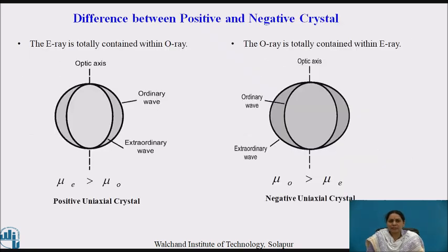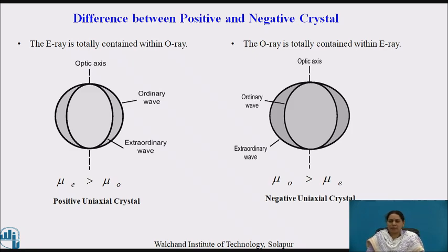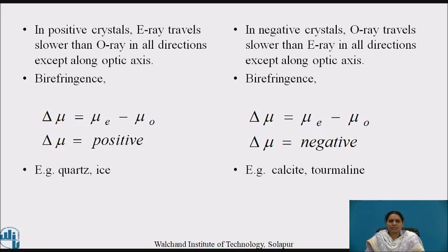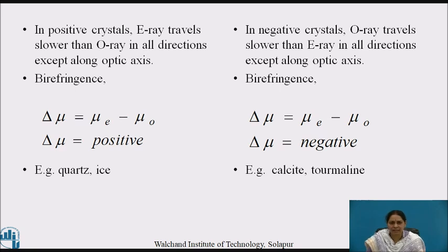Now let us see the difference between positive and negative crystals. In a positive crystal, the E-ray is totally contained within the O-ray wavefront, while in a negative crystal the O-ray is totally contained within the E-ray wavefront. The diagram shows the orientation of the E-ray and O-ray and the changes in refractive indices. In a positive crystal, the E-ray travels slower than the O-ray (except along the optic axis), while in a negative crystal the O-ray travels slower than the E-ray in all directions except along the optic axis. The birefringence is positive for a positive crystal and negative for a negative crystal. Examples of positive uniaxial crystals include quartz and ice, while calcite and tourmaline are examples of negative crystals.